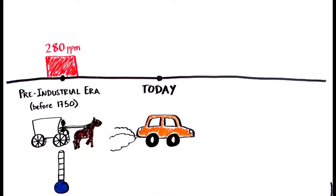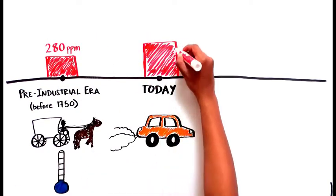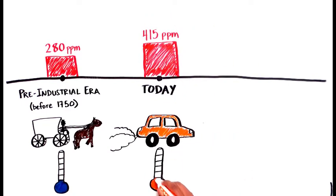Now, the concentration of CO2 is about 415 parts per million. That has corresponded to a rise of approximately 1 degree Celsius in Earth's surface temperature.